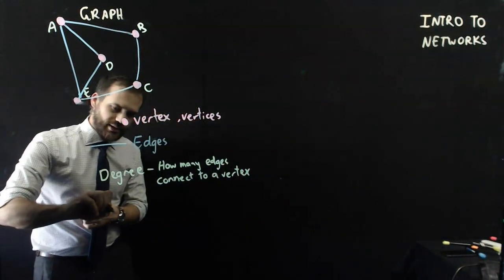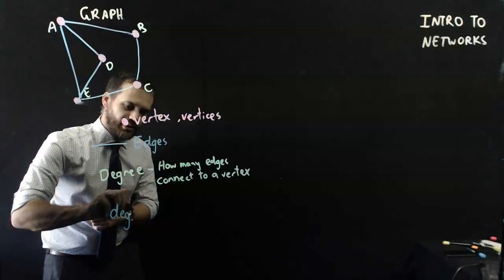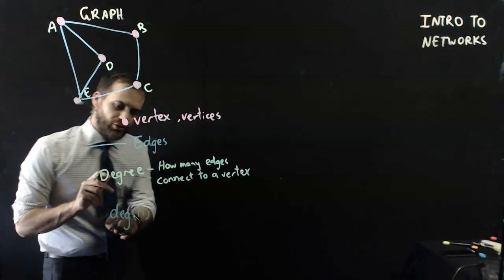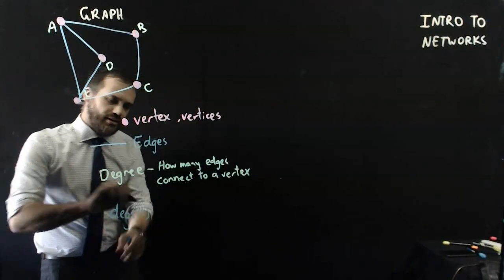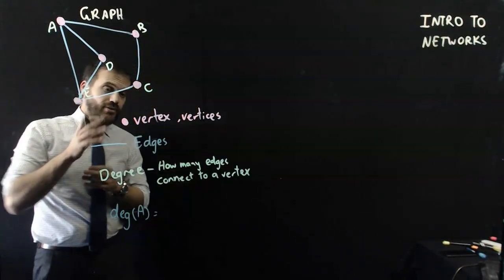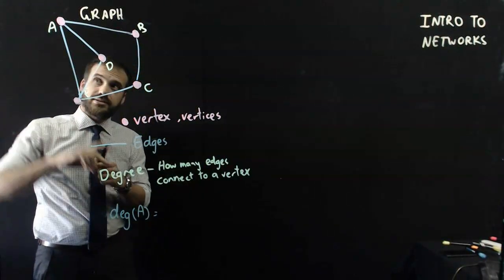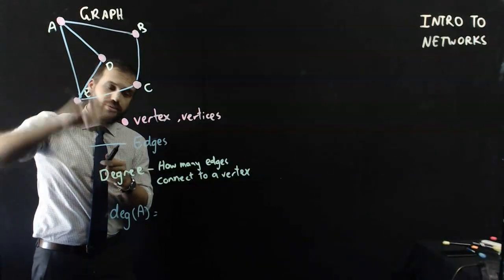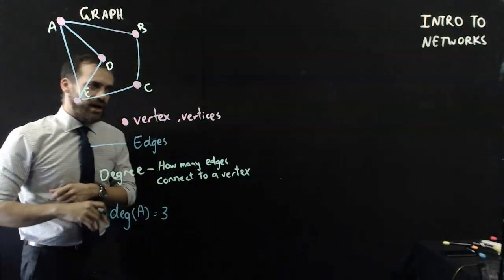We can say that town A has, or really this is the way you write it. The degree of A is equal to, and then we count up the edges that connect to the vertex. 1, 2, 3. So the degree of A is 3.